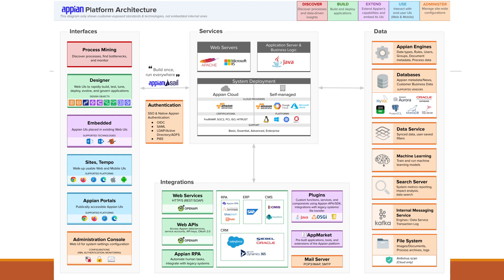External database options include MySQL, Oracle, and others. We also have data services, a search server, file systems, and more. The file system is used whenever we work with documents, images, or any other files in our application. All these topics will be covered in upcoming lectures. That's all for this lecture.